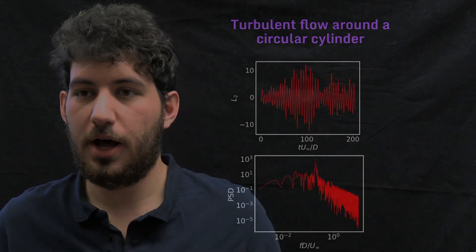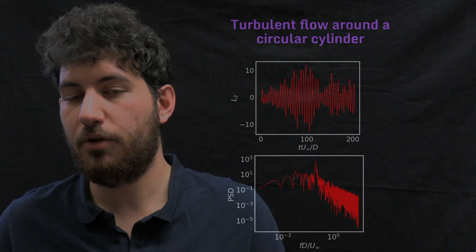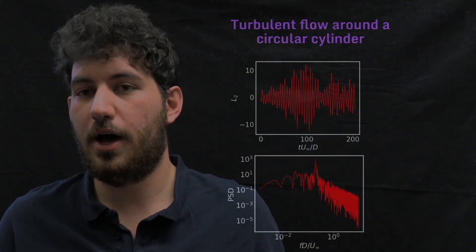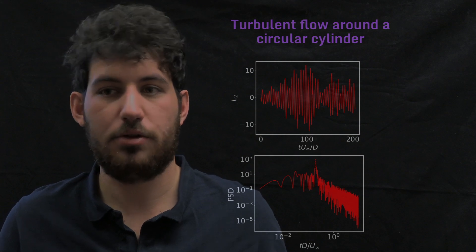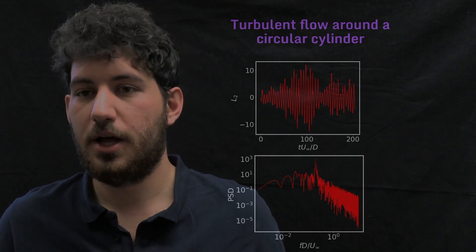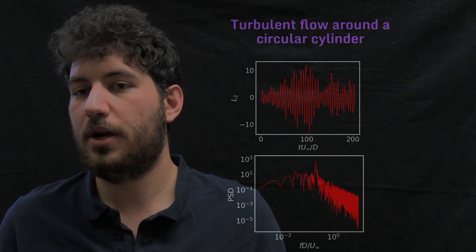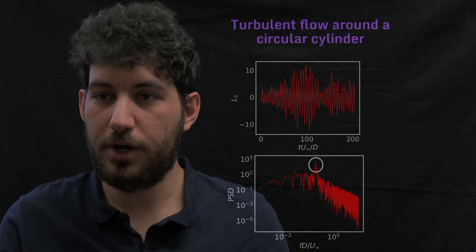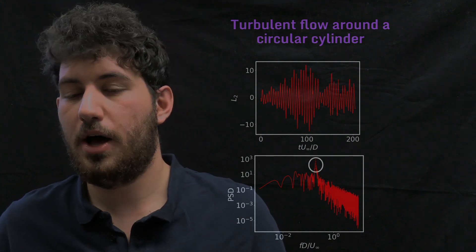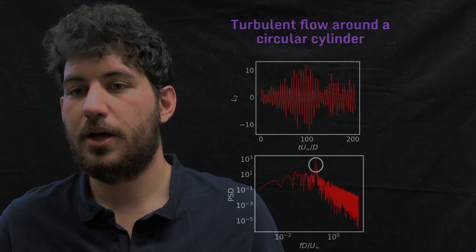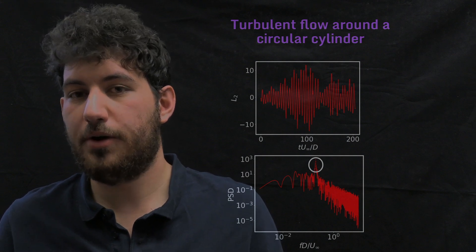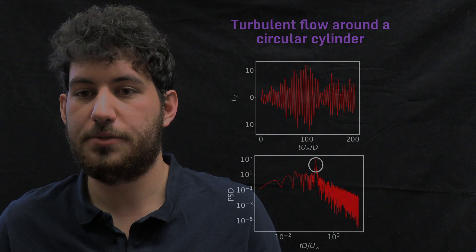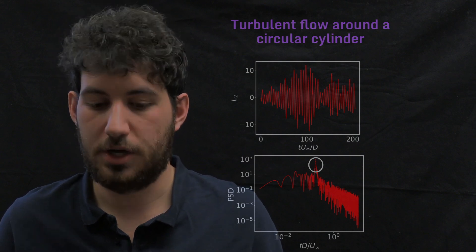And as I was saying before, these latent vectors, apart from being really good at recovering energy, they are also informative on the flow field dynamics. For instance, here we have the plot of one of these latent vectors and the power spectral density of it. And actually we see a coherent peak here, which this coherent peak corresponds to the frequency of the vortex shedding of the cylinder and the peak of the spectra of the lift force in the cylinder.